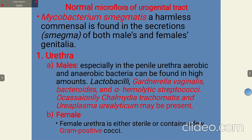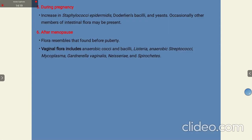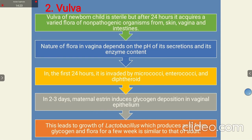In females, the vulva of a newborn child is sterile, but after 24 hours it acquires a number of non-pathogenic flora from skin, vagina, and intestine. The nature of this flora depends on the pH of its secretions and enzyme content. In the first 24 hours, the vagina is invaded by Micrococci, Enterococci, and diphtheroids. After 2 to 3 days, maternal estrogen induces glycogen deposition in the vaginal epithelium, leading to growth of Lactobacillus, which produces acid from glycogen. The flora for a few weeks is similar to that of an adult.